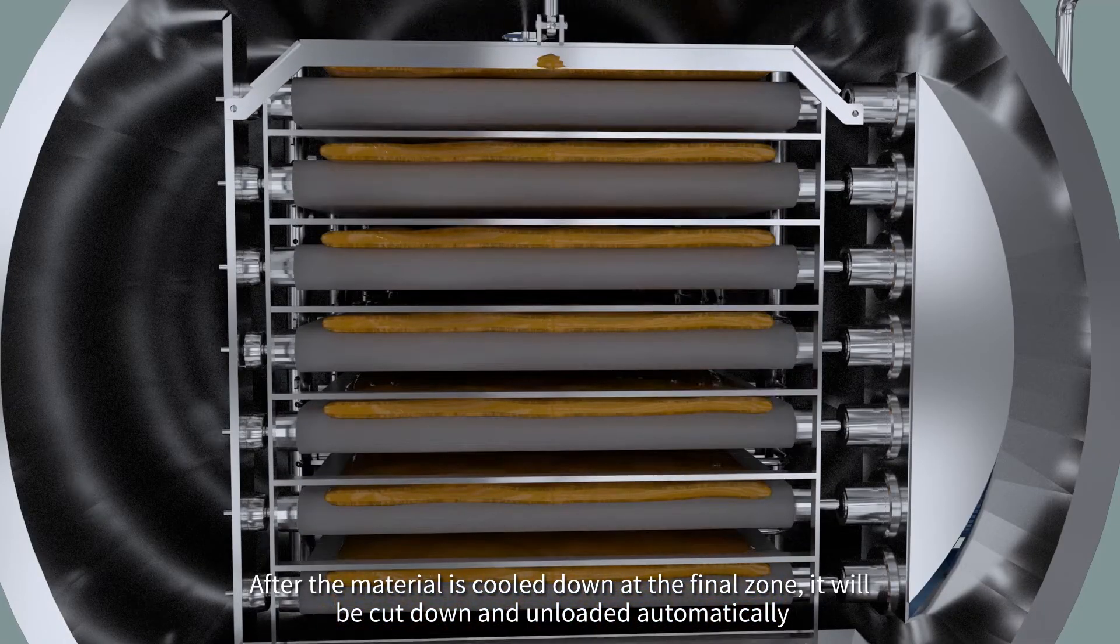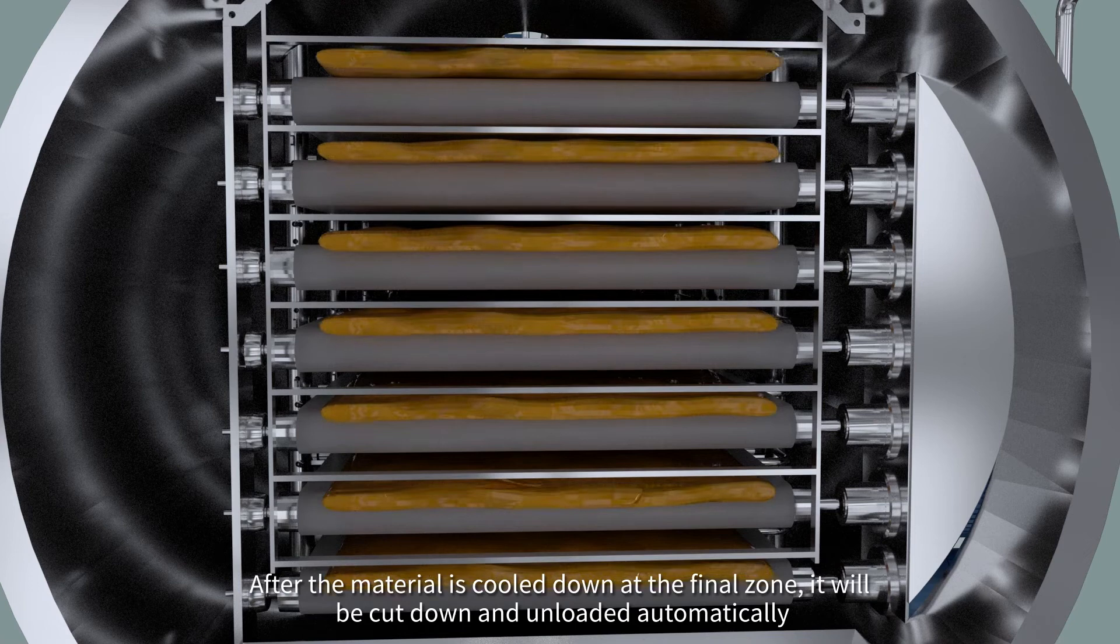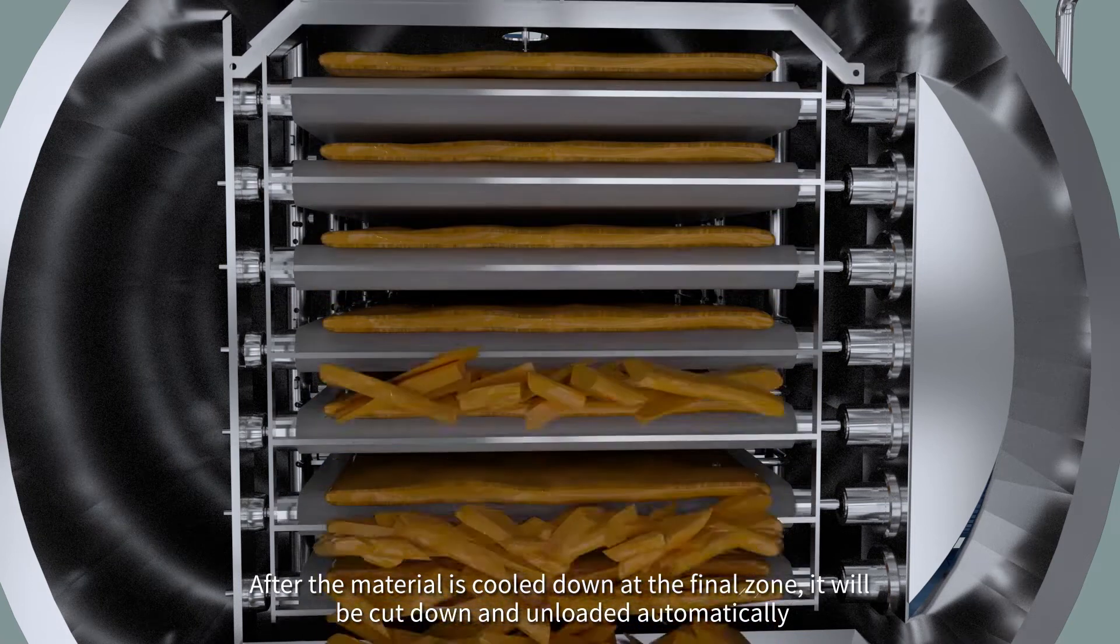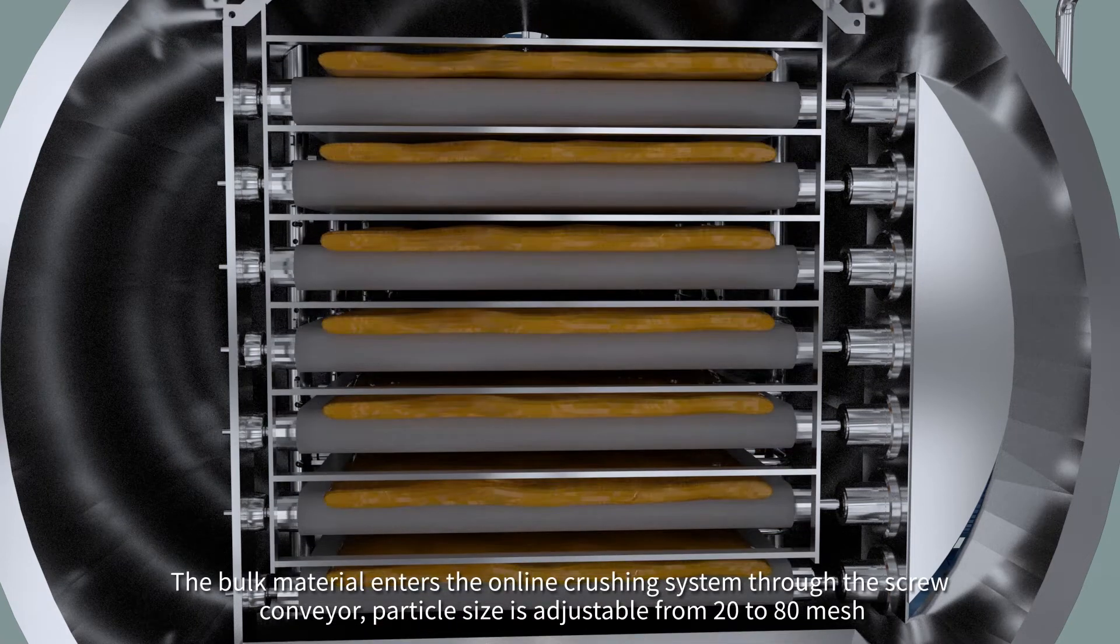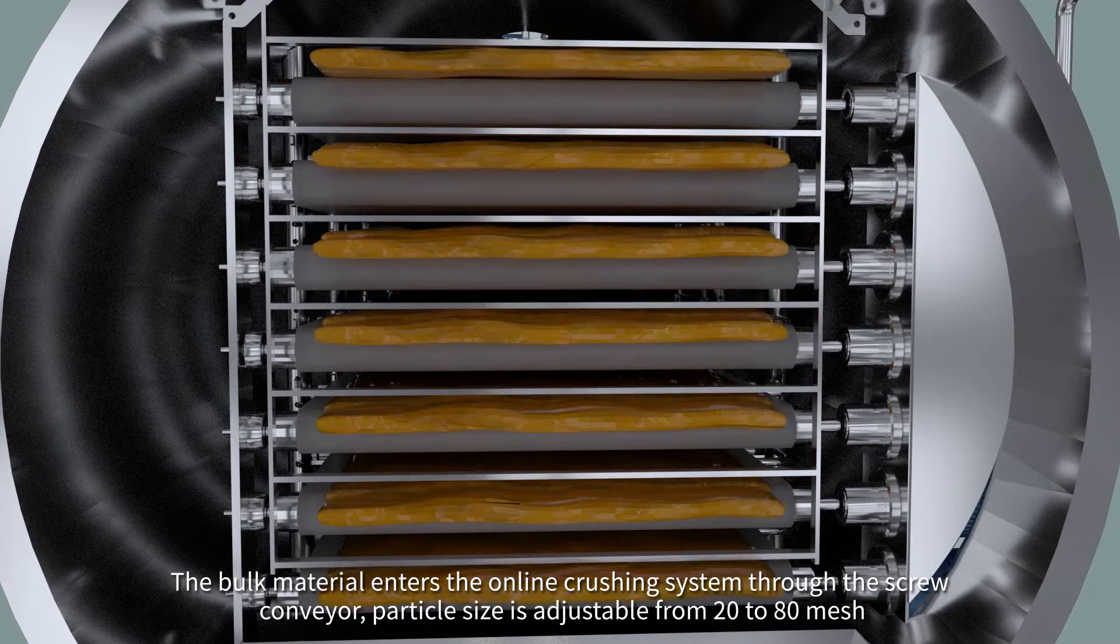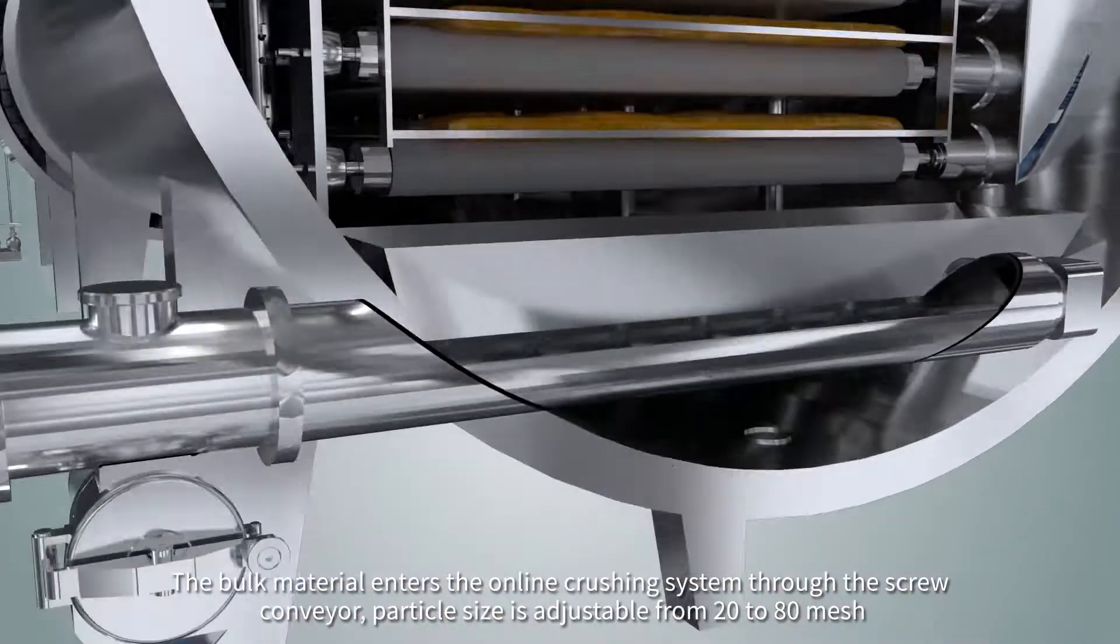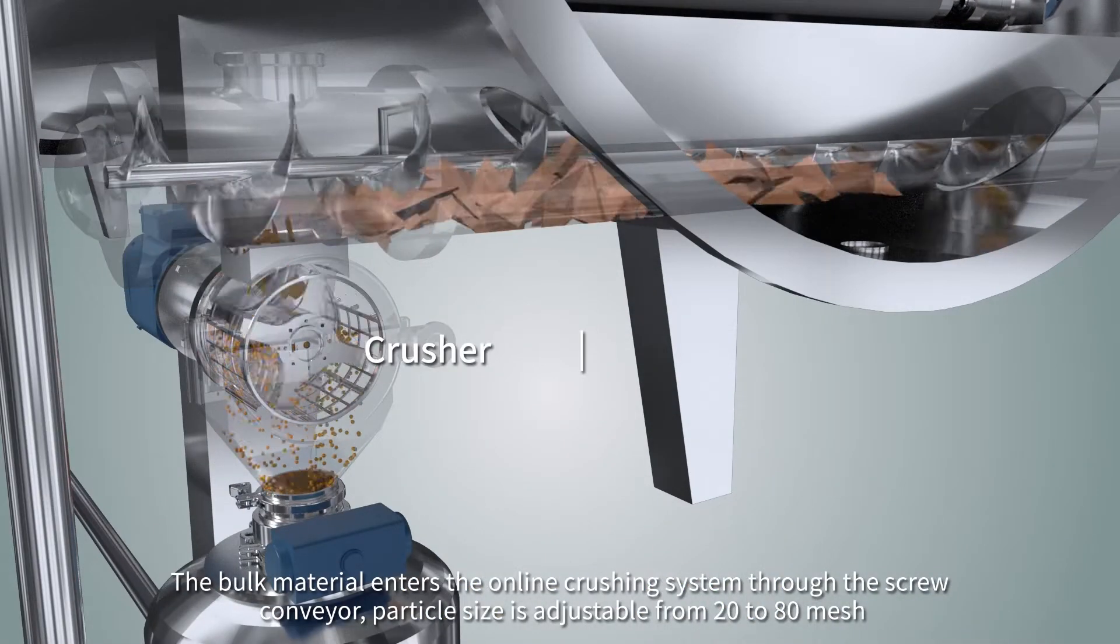After the material is cooled down at the final zone, it will be cut down and unloaded automatically. The bulk material enters the online crushing system through the screw conveyor. Particle size is adjustable from 20 to 80 mesh.